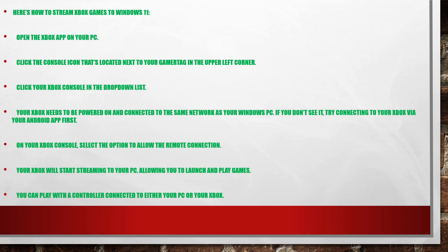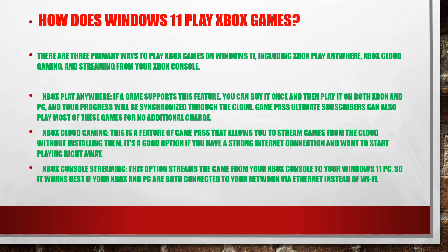Here is how to stream Xbox games to Windows 11. Open the Xbox app on your PC and click the console icon located next to your gamer tag in the upper left corner. Click your Xbox console in the drop-down list — your Xbox needs to be powered and connected to the same network as your Windows PC. If you don't see it, try connecting to your Xbox via your Android app first. On your Xbox console, select the option to allow the remote connection. Your Xbox will start streaming to your PC, allowing you to launch and play games. You can play with a controller connected to either your PC or your Xbox.